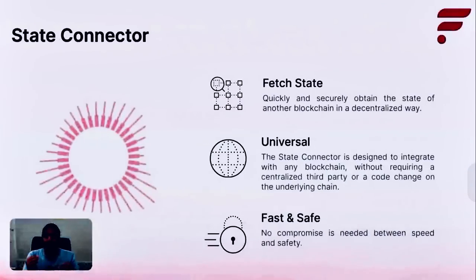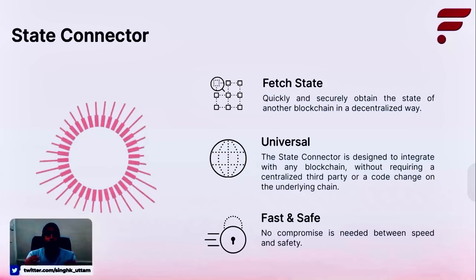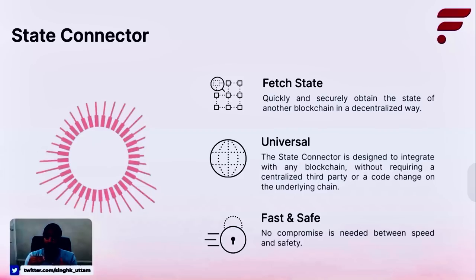Now, let's talk about State Connector. The State Connector enables information from both the blockchain and the internet to be used securely, scalably, and trustlessly with smart contracts on the Flare network. It does so in a decentralized and secure manner, which can power a wide range of interoperability solutions, which in turn will enable developers to build applications that are multi-chain or cross-chain.